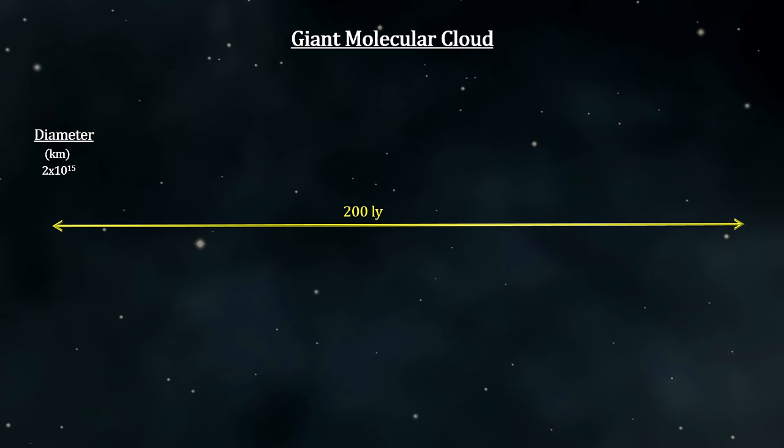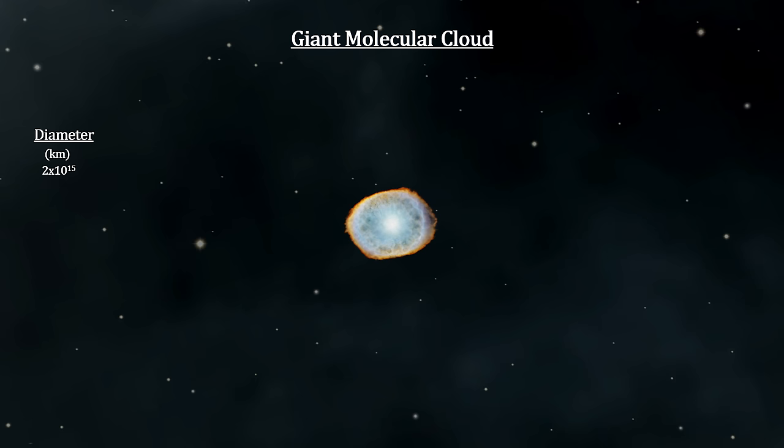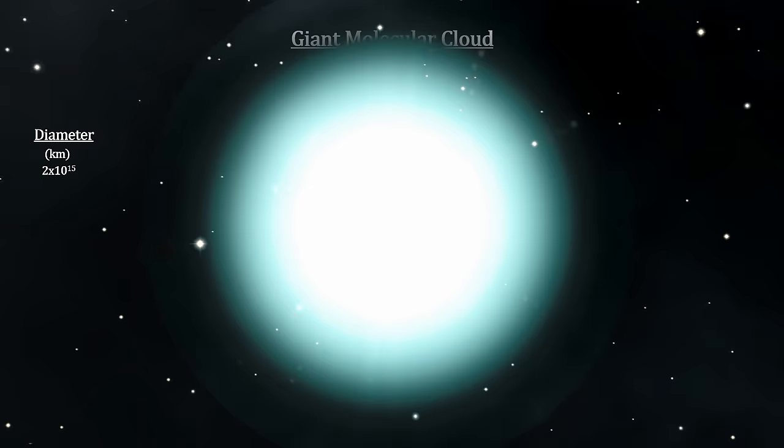They contain mostly hydrogen and some helium, but they are also seeded with some heavier elements, such as oxygen, carbon, iron and others, from the dusty remains of earlier generation stars that ended as planetary nebulae or supernova remnants.